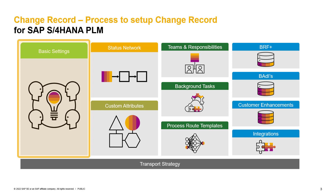Fourthly, which references are you planning to use for the different change record items? A reference differentiates, for example, a change, a creation, or a deletion of change objects. Lastly, is the processing status needed? If yes, for which change record type do you want to enable the processing status? A processing status needs to be maintained on change object level and provides information on whether an item change is possible, needed, or not required.